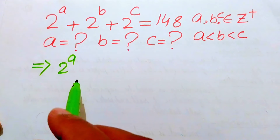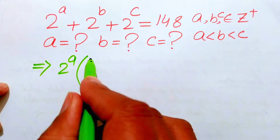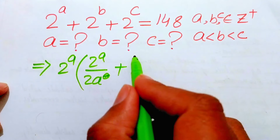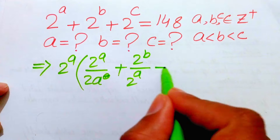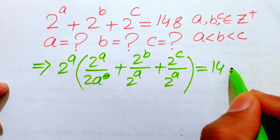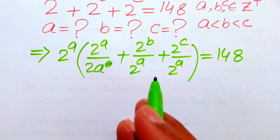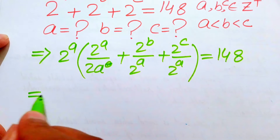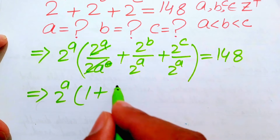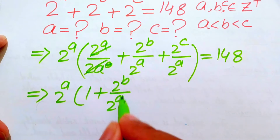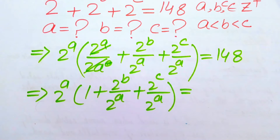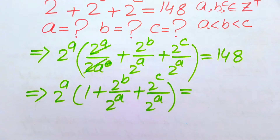When we multiply by 2 to the power of a, we get 2 to the power of a times the quantity: 2 to the power of a over 2 to the power of a, plus 2 to the power of b over 2 to the power of a, plus 2 to the power of c over 2 to the power of a, equals 148. The 2^a terms cancel, giving us 2^a times (1 plus 2^b over 2^a plus 2^c over 2^a) equals 148.